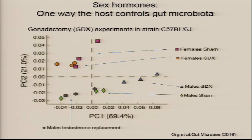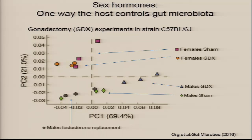We've been talking about sex differences and hormones. We did gonadectomy studies on a number of different strains. If you take a female sham-gonadectomized, you can plot principal coordinate analysis 1 and 2 as a summary of microbiota composition. If you gonadectomize them, they shift. For sham-treated males, gonadectomy shifts them further, and testosterone replacement shifts them back. This is not surprising because sex affects everything, and hormones are likely to have big effects.